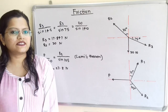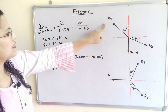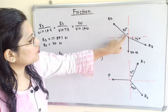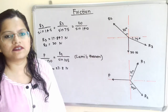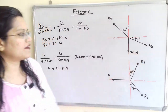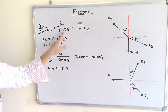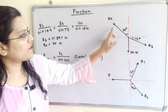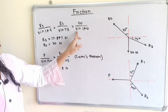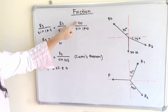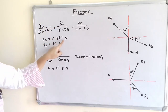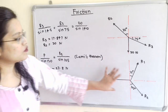Applying Lamy's theorem for the block: R3 divided by sine of the angle between R2 and 20 N equals R2 divided by sine of the angle between R3 and 20 N equals 20 divided by sine of the angle between R2 and R3. The angles work out as: sine(145°), sine(75°), and sine(140°) respectively. Solving using 20 divided by sine(140°) gives R3 = 17.84 N and R2 = 30 N.